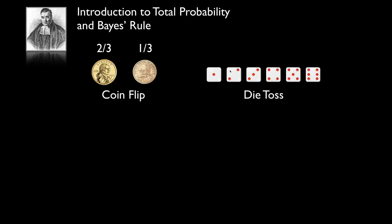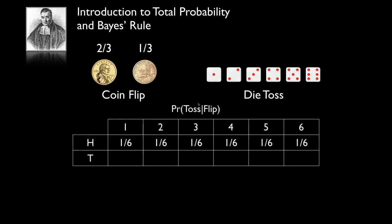We have two dice — one fair and one unfair. The probability law for the tosses is conditioned on which side the coin shows. If we flip heads, we use the fair die, where every side has equal probability of one-sixth. If the coin shows tails, we toss the unfair die: the side with one dot is seven times more likely than six, the side with five is two times more likely, four is three times, three is five times, and two is six times more likely than six. This is what we call a loaded die.